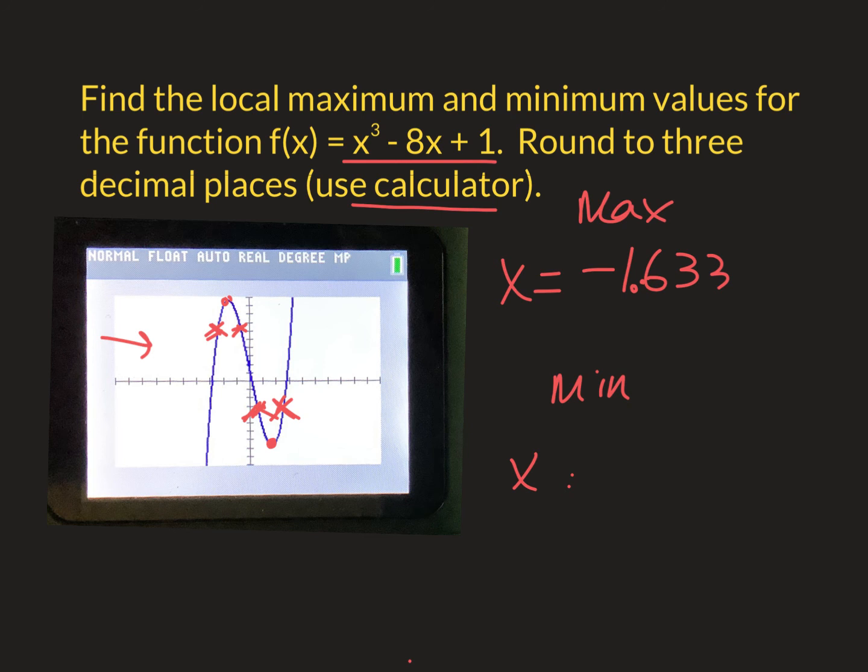This is embarrassing on a video. So second calc, number two. Left bound where I had it. Right bound where I had it. Enter. Oh, I hit. I see what I did. Second trace. Third time. I'm looking for minimum. I keep hitting zero. Minimum.